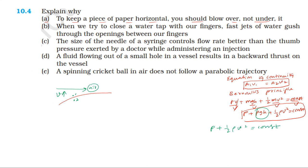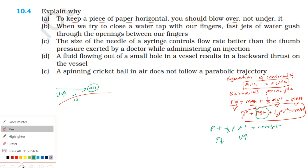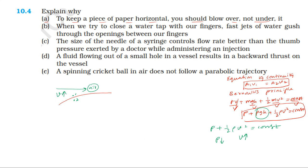From Bernoulli's equation, pressure energy plus one-half rho v squared equals constant. As velocity increases above the paper, the pressure above decreases. So the pressure above the paper is less.